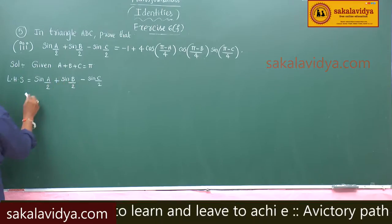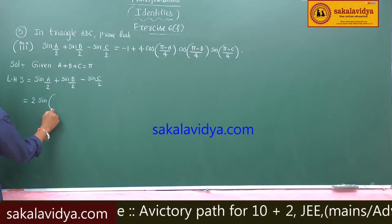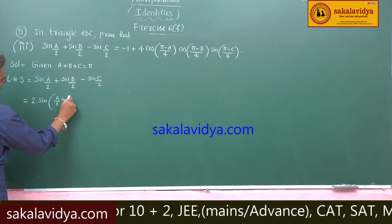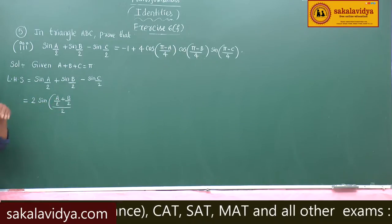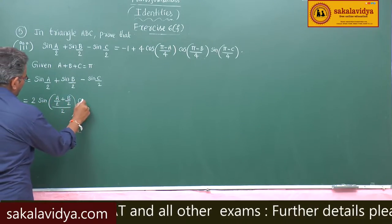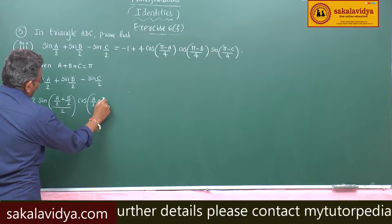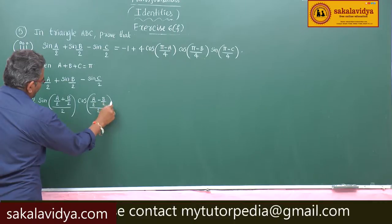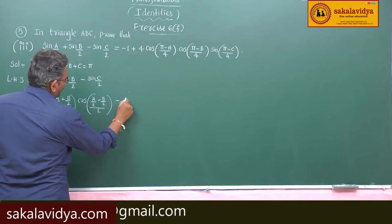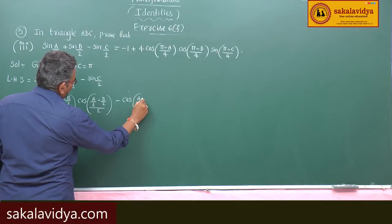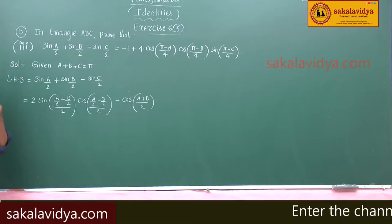Now sin(a/2) + sin(b/2) can be written as 2·sin((a/2 + b/2)/2) · cos((a/2 - b/2)/2), using the sum-to-product formula. Minus sin(c/2) can be written using cos((a+b)/2)/2, since a + b + c = 180°.